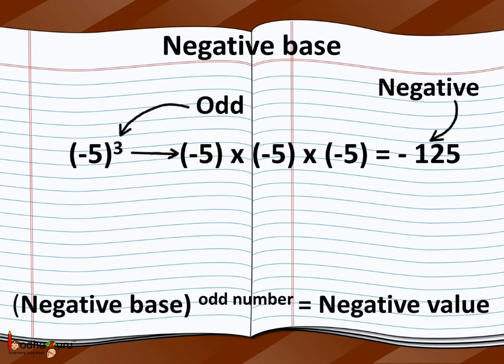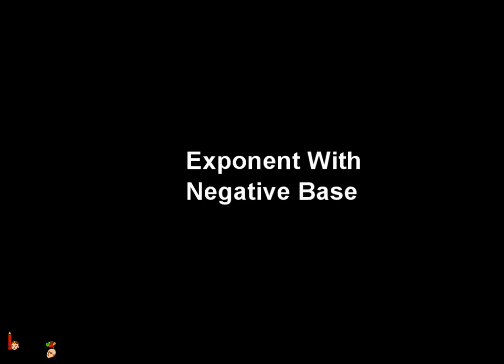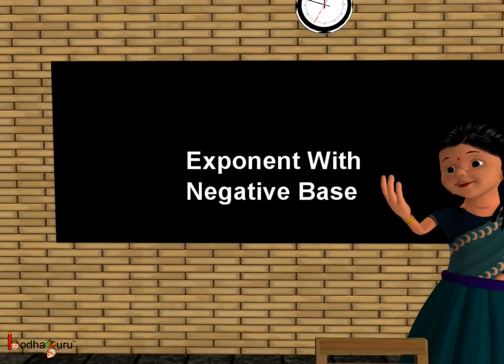Another example: minus 5 to the power 3. Here, with the negative base, the exponent 3 is an odd number. So, minus 5 multiplied by minus 5 multiplied by minus 5, which is equal to minus 125. So, the result is a negative value. Now you know about the exponents with the negative base. That's all for now. Bye-bye children.